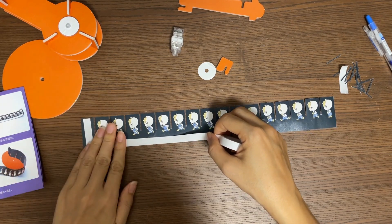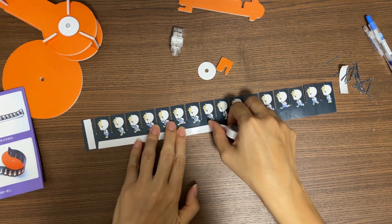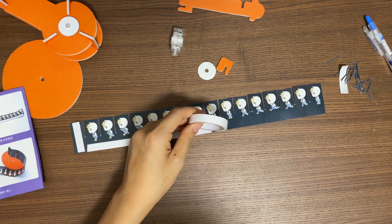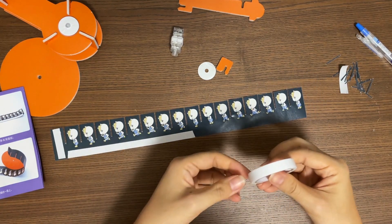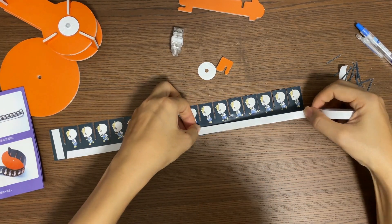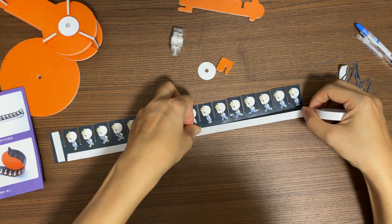To make it easier, I'll paste the double-sided tape from the beginning to the middle of the paper first. Cut it. Then I'll paste it again from the middle of the paper to the other end of the paper.